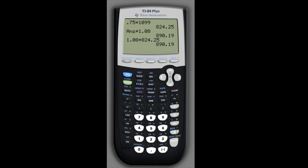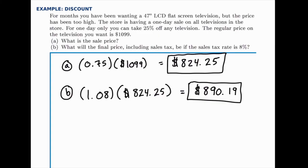So the answer is $890.19. After the discount is applied, then the price is $824.25, and then at the register, the sales tax is applied, bringing the total to $890.19.